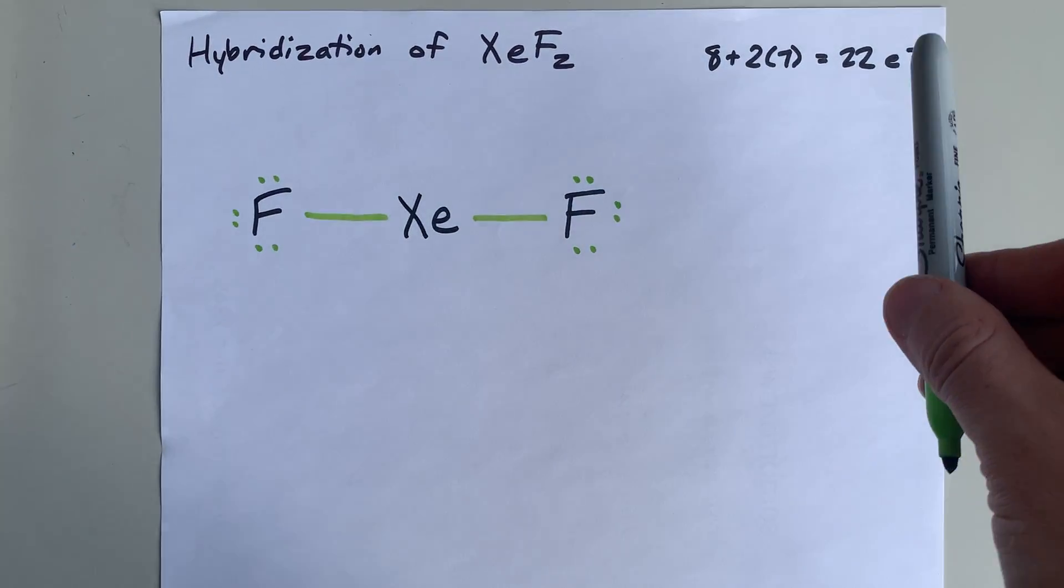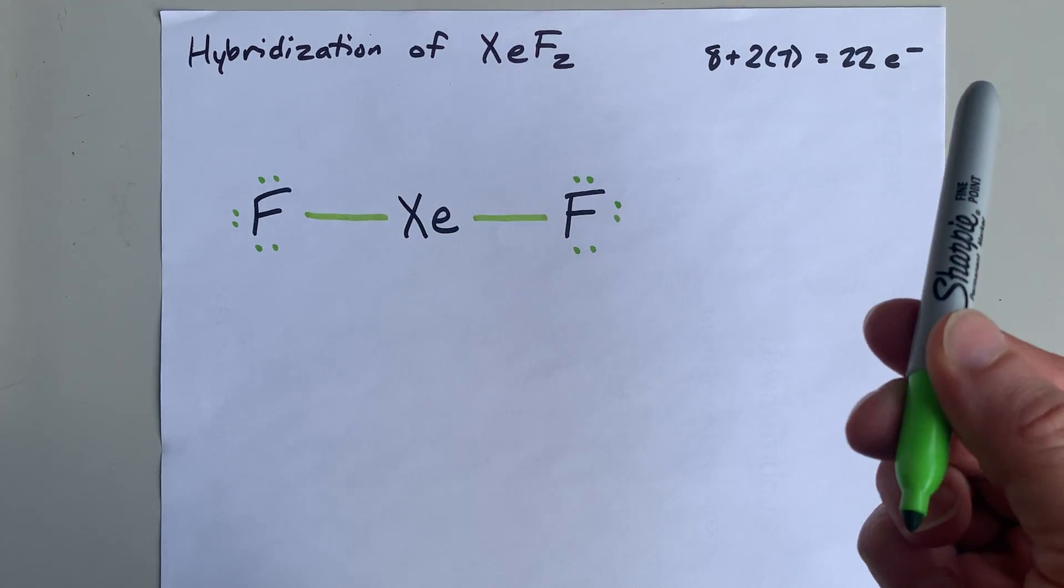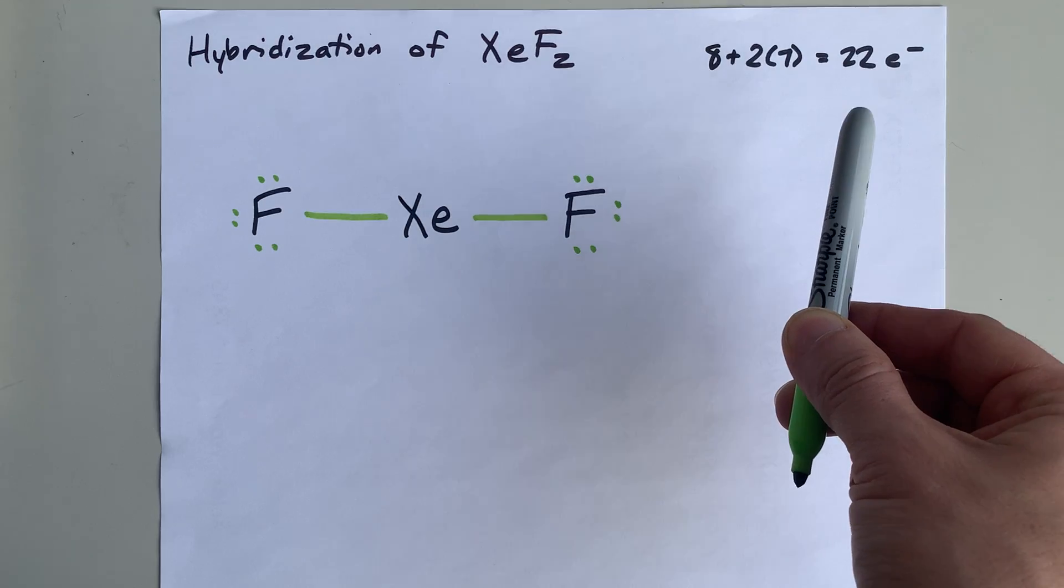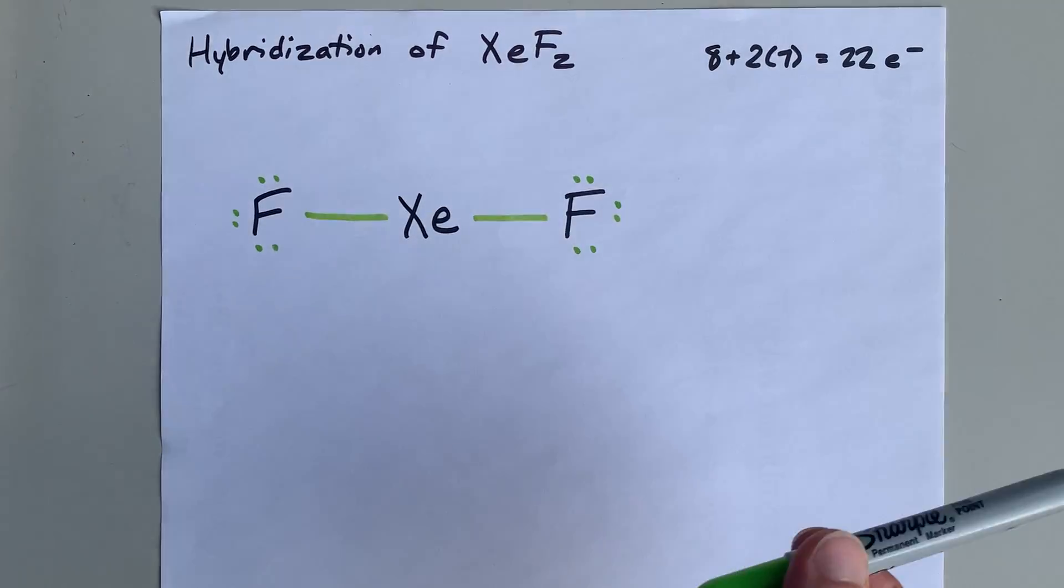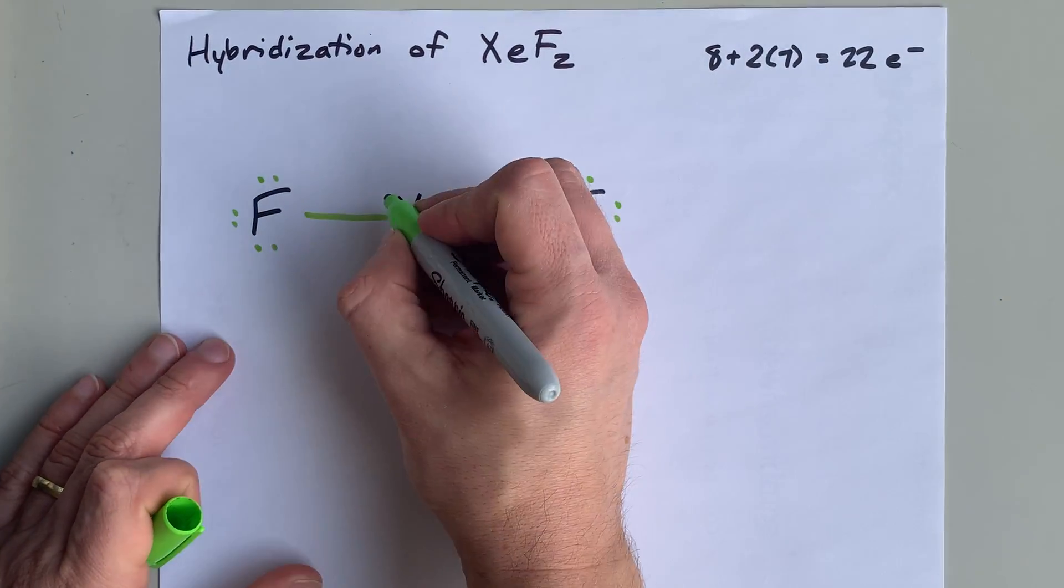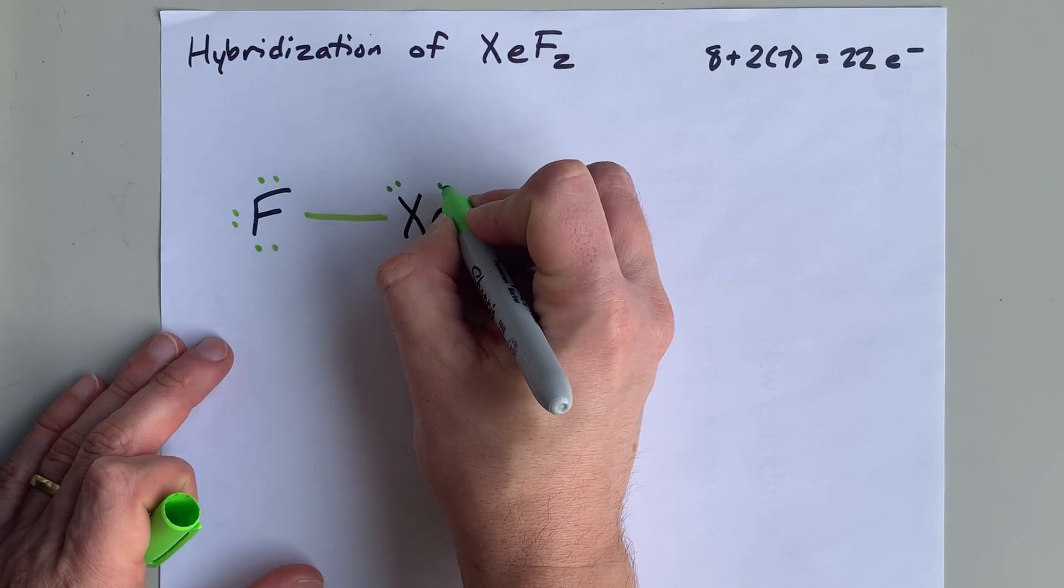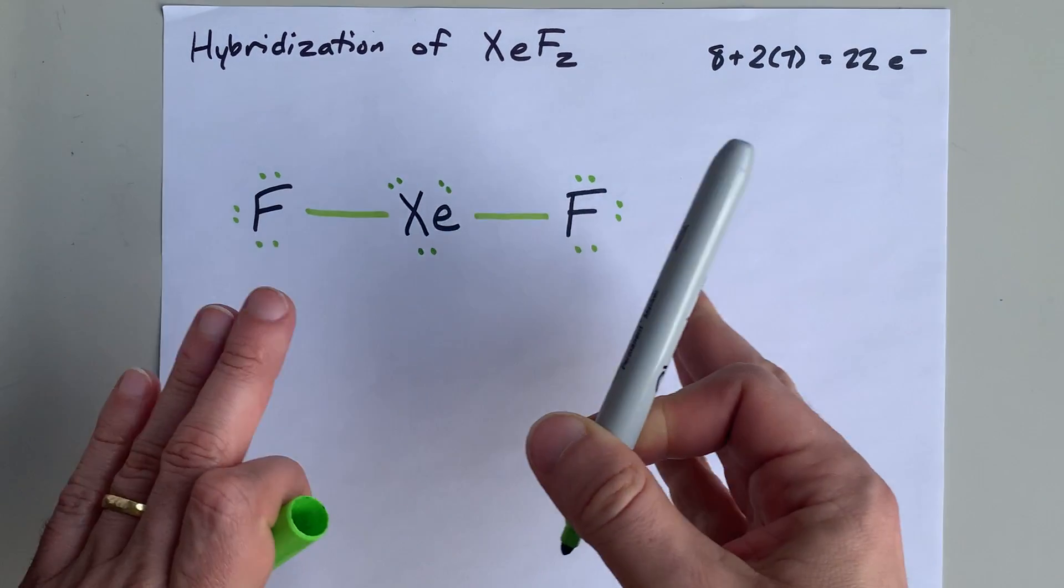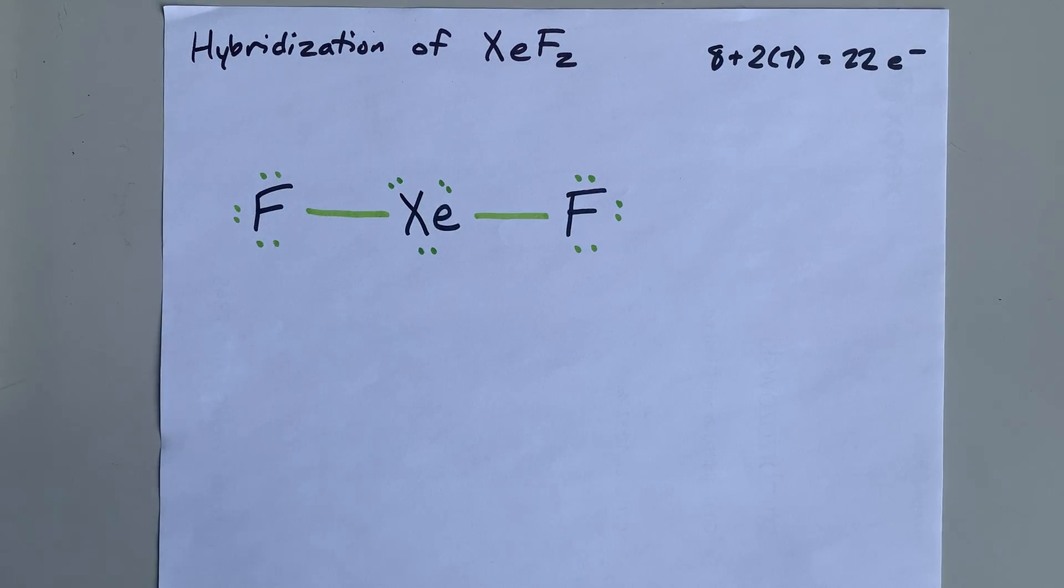I still have 6 extra electrons to deal with. Remember, I have 16 here, and I need 22. All you can do is dump them onto the central atom. 17, 18, 19, 20, 21, 22. And this is the complete Lewis structure for xenon difluoride.